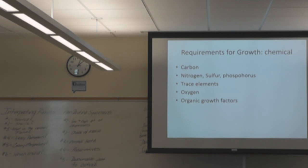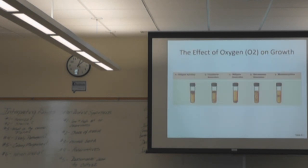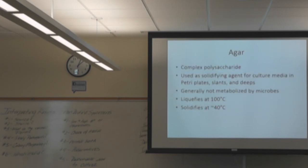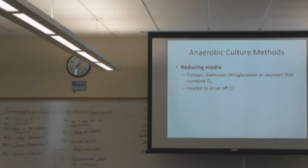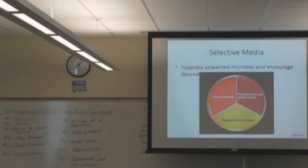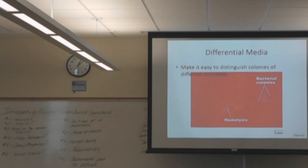Requirements for growth — you've seen this list in the previous PowerPoint: chemical requirements, oxygen levels in tubes, and so on. The thioglycollate fluid that you do oxygen levels in is considered a reducing media because you're driving the O2 off. Selective media inhibits unwanted microbes — that's your MSA plate. Differential media — there's a nice BAP plate shown for that.